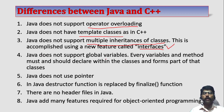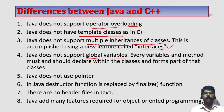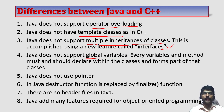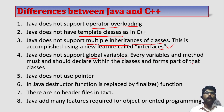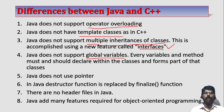Java does not support global variables. Global variables create data security problems — data can be accessed by anybody. So in Java, global variables are removed because the variable or data is treated as a critical one in OOP. Every variable and method must be declared within a class and forms part of that class; you have to declare every variable within the class, not outside the class.